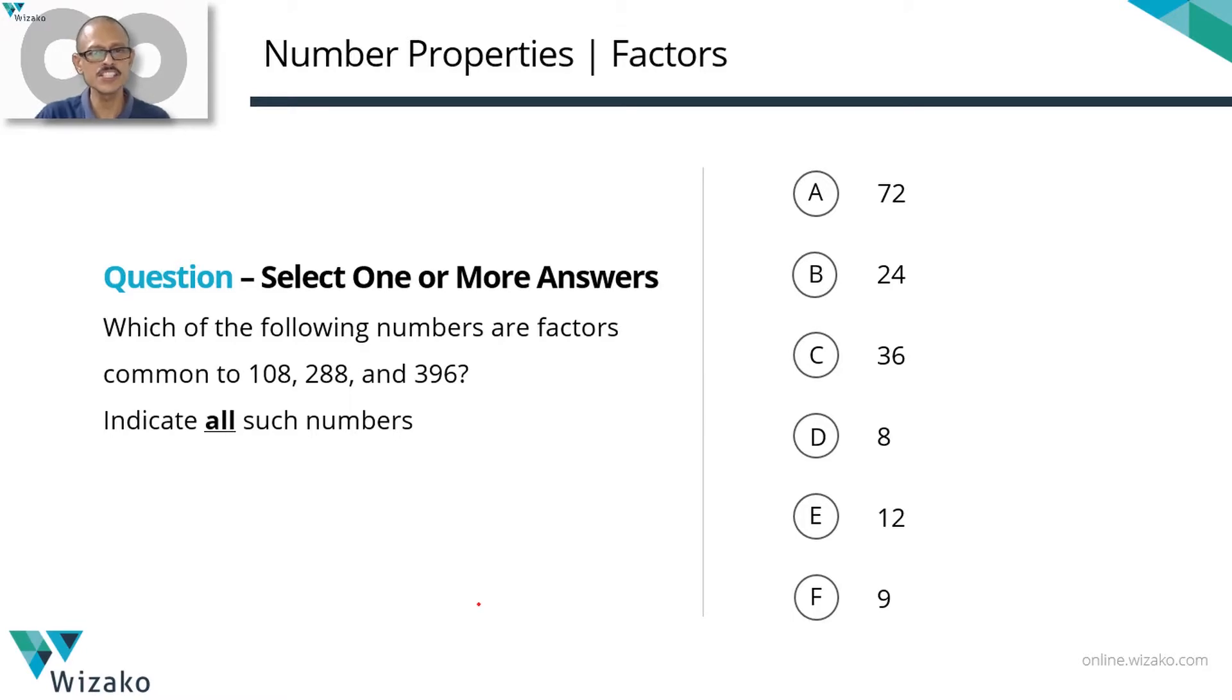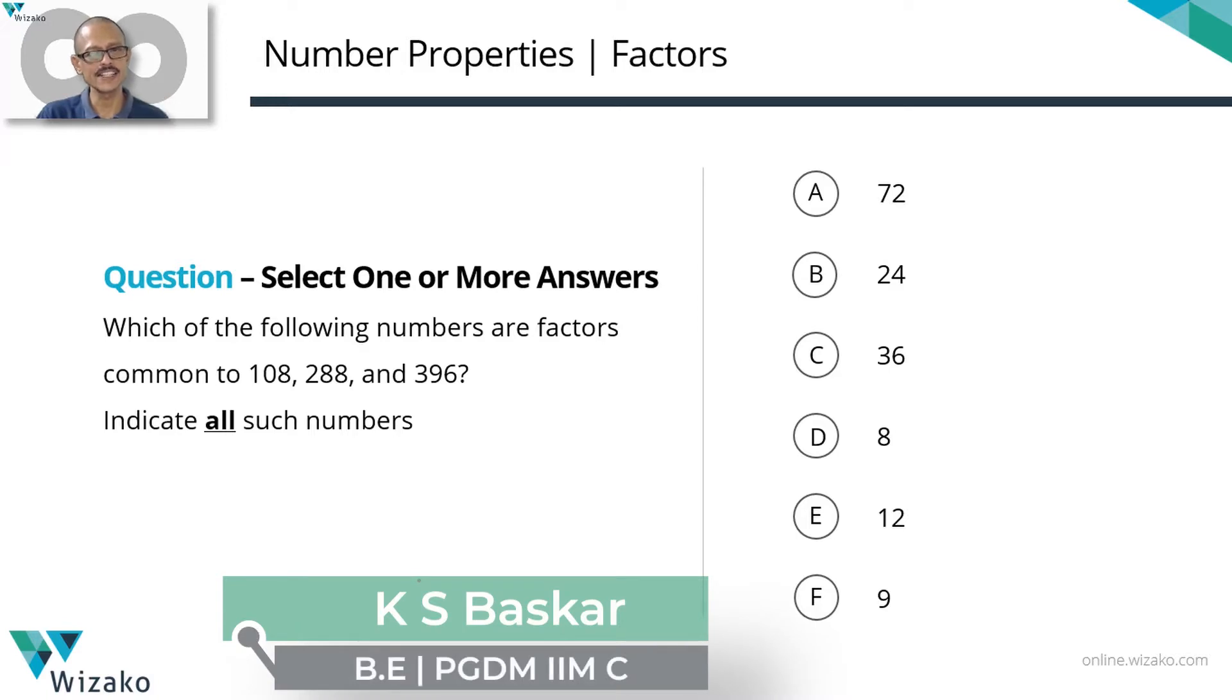The given question is a medium difficulty GRE quantitative reasoning practice question. This question is a select one or more answers question from the topic number properties, focuses on the concept of factors and HCF. Which of the following numbers are factors common to 108, 288 and 396? Indicate all such numbers.